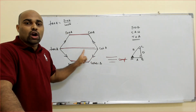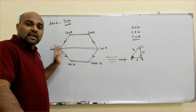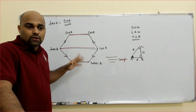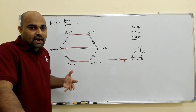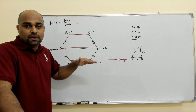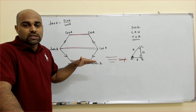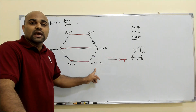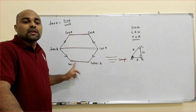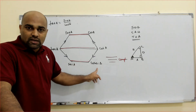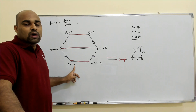Continuing the complementary ratios: cot(90° - A) = tan A, and tan(90° - A) = cot A. Finally, sec(90° - A) = cosec A, and cosec(90° - A) = sec A. This is the complementary ratio. Those who finished this chapter know what the complementary ratios are.